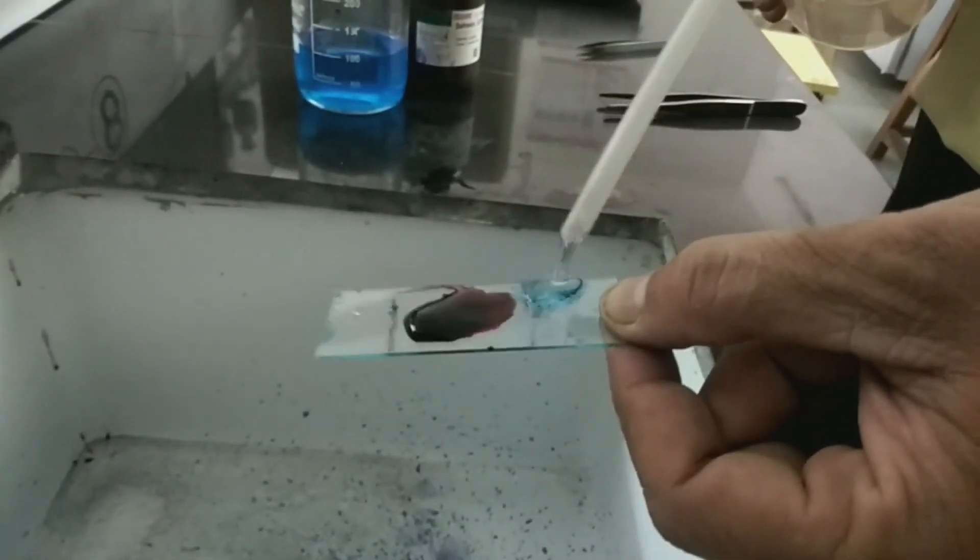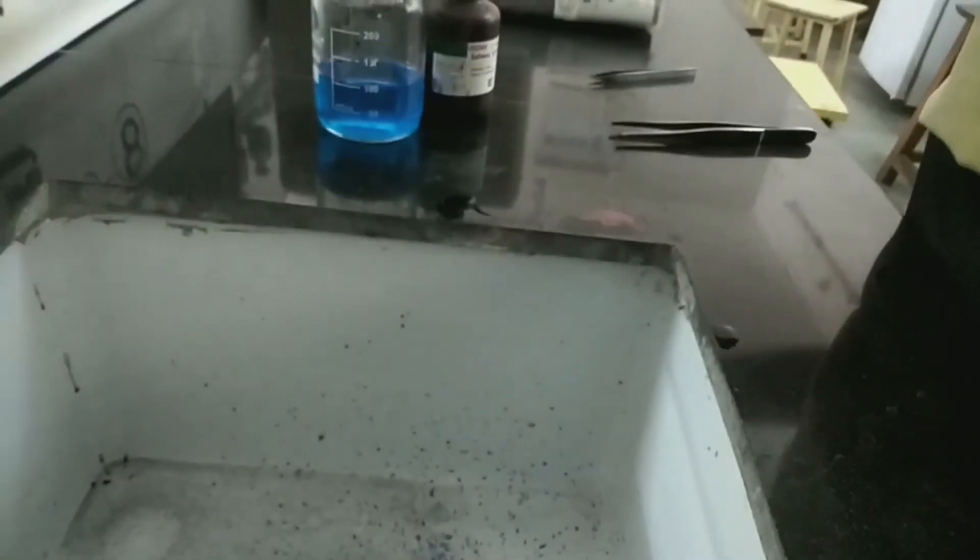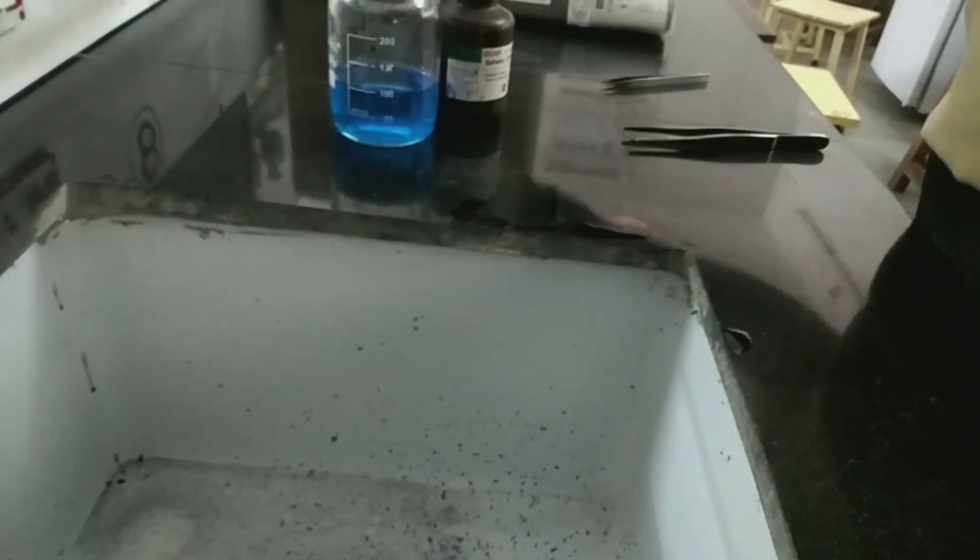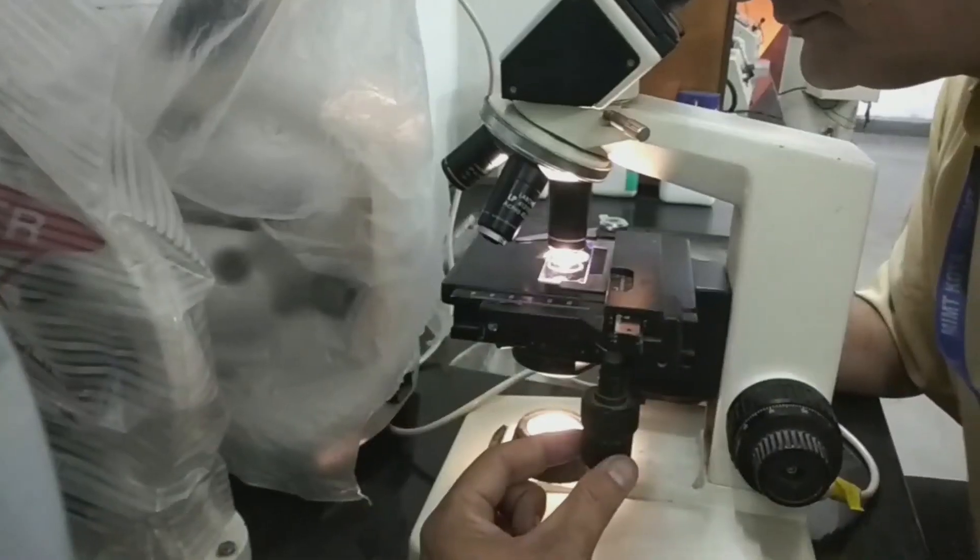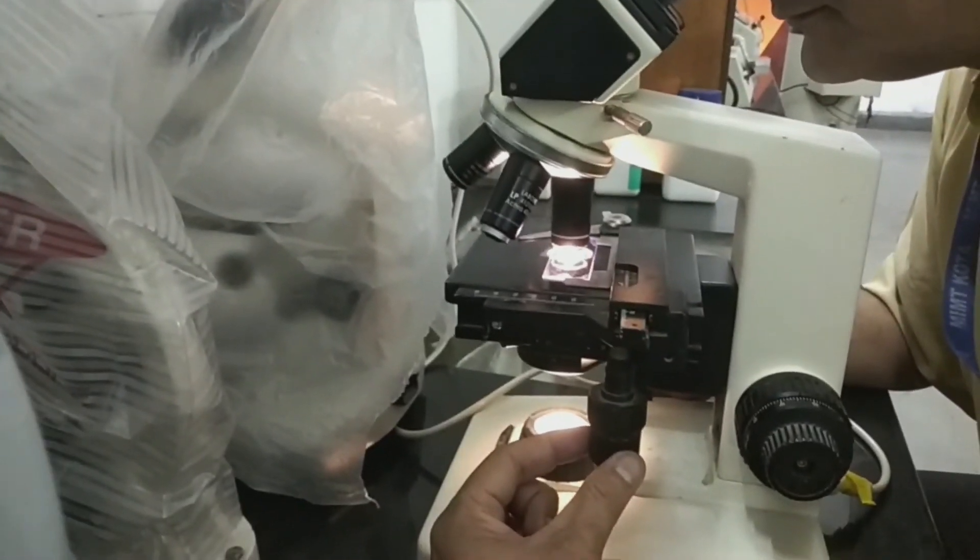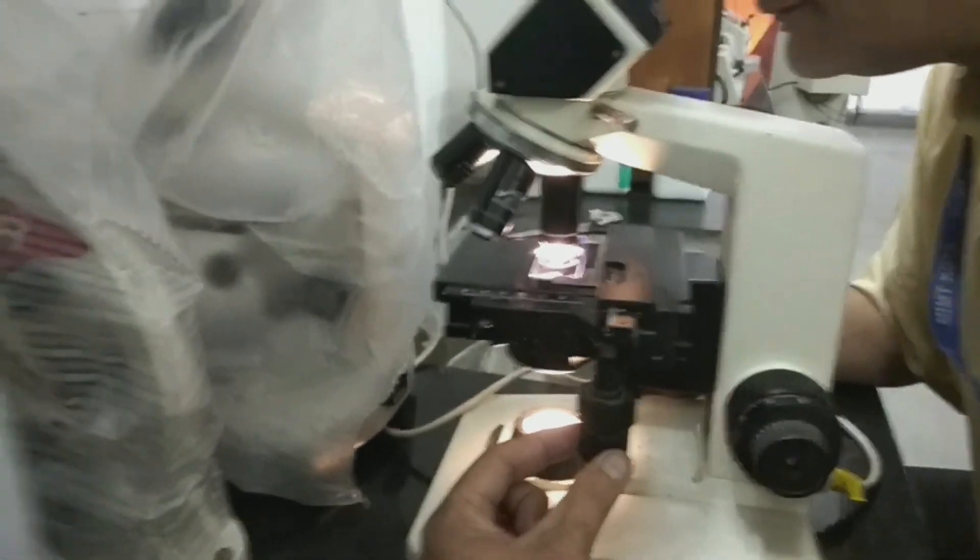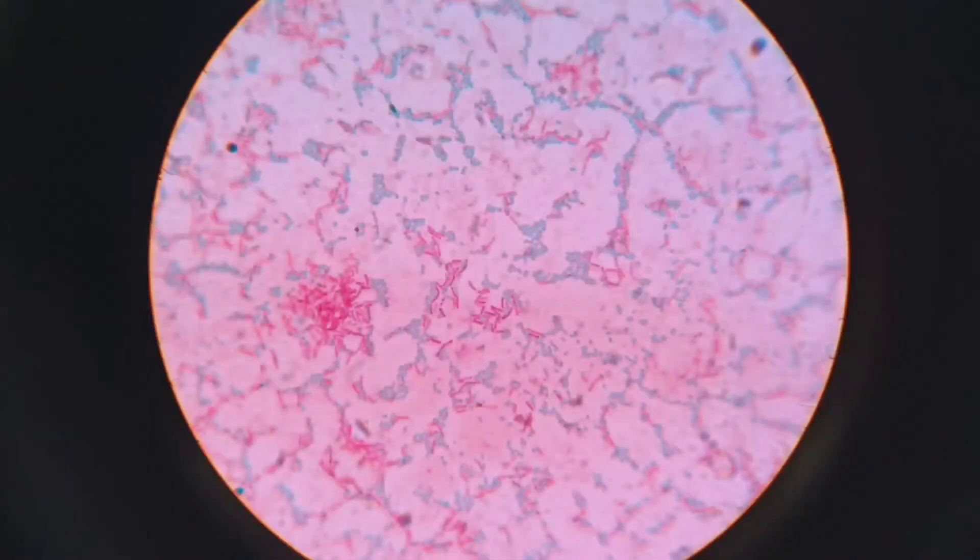After 30 seconds, wash the safranin with distilled water carefully. Be properly careful because if excess safranin is here, you are not getting the proper shape of the bacteria also. After that, visualize the slide under microscope under 100x power and you can see the result as follows.